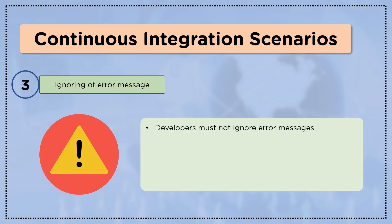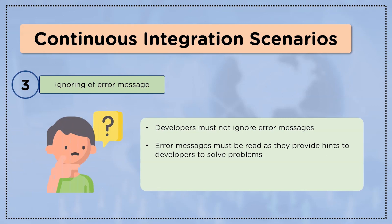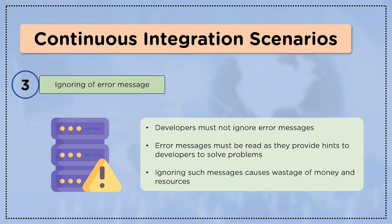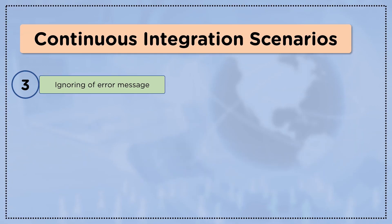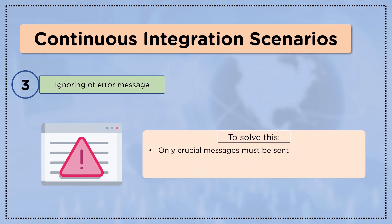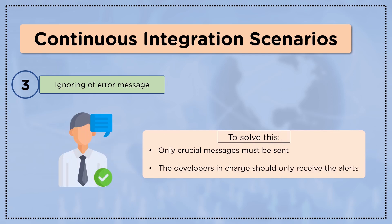The third and last scenario in this category is ignoring error messages. Developers must not ignore error messages, as they provide hints to solve problems and challenges. Ignored messages may result in the wastage of money and resources. Key steps: first, send only crucial messages; second, developers in charge should only receive relevant alerts — it is not necessary for all developers to receive messages for all problems. Developers must receive messages for errors that particularly concern them.